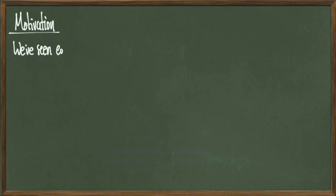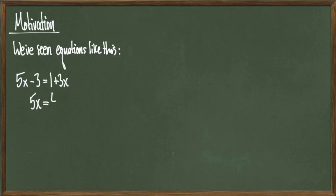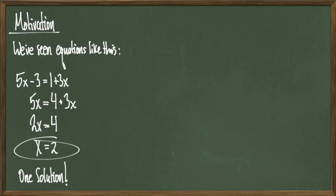We'll start off with a motivating question. Consider the equation 5x minus 3 equals 1 plus 3x. At this point, we should be comfortable with how to solve this. When you run through the steps, you'll get a solution of x equals 2. You might have noticed that with linear equations, you get at most one solution, which makes writing our answer pretty easy. Just write x equals 2.